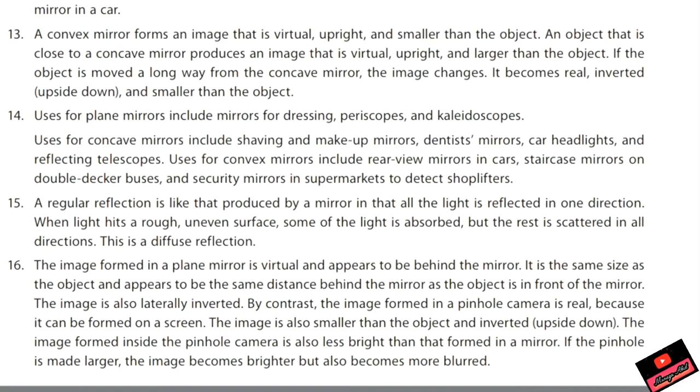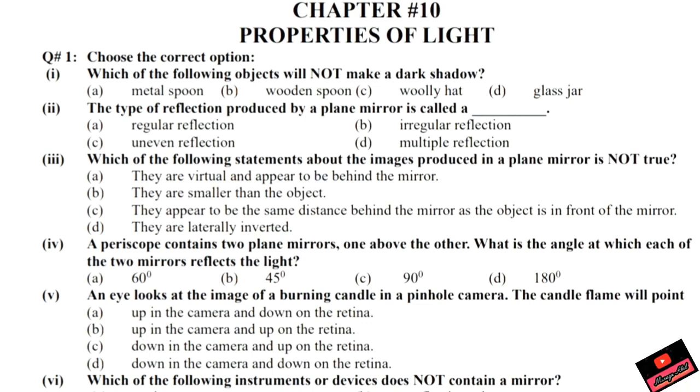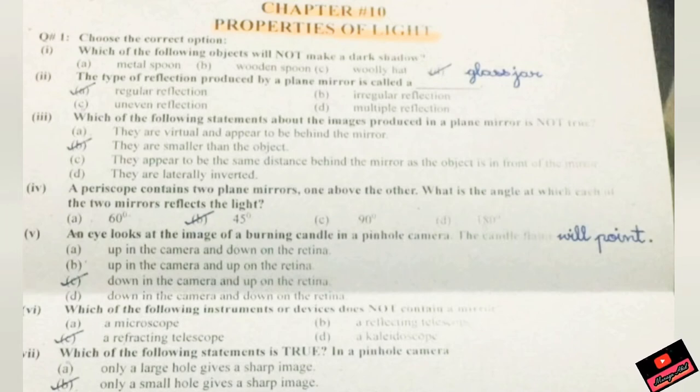Now we will solve the worksheets MCQs. Which of the following object will not make a dark shadow? The answer is very clear, it's a glass jar because all the light will be passed through it. The type of reflection produced by a plane mirror is called a regular reflection.